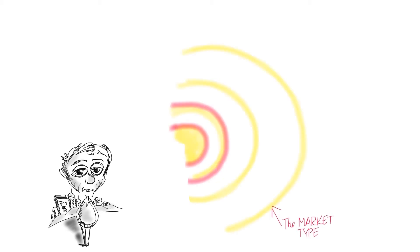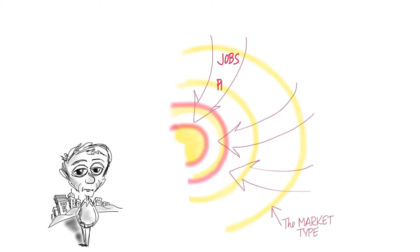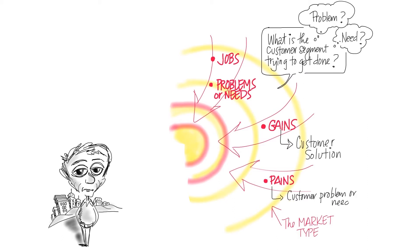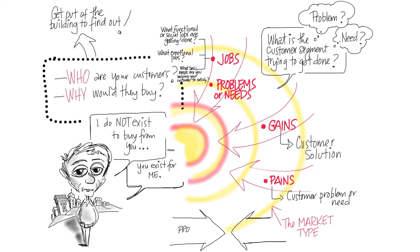In customer segments, you're also looking for three things. One is you're still trying to understand from this side what are the gains, what are the pains, but also what are the jobs the customers want you to do — what are the functional or social jobs, what are the emotional jobs.